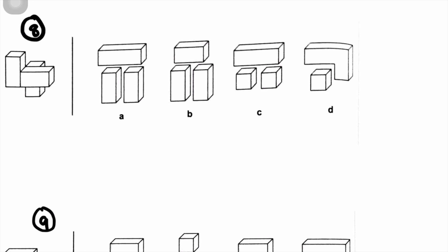Question number eight: there are two cuboids here, so I'm going to eliminate anything without at least two cuboids — eliminating C and D. Looking at A, the top cuboid is much larger than the other two, but in the original image all three cuboids are similar in size. So it can't be A. The answer is B, where all the cuboids are similar in size.